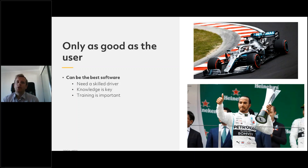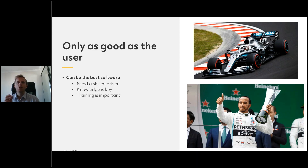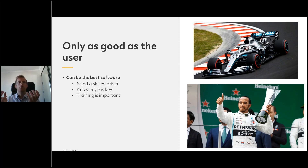It's also only as good as the user. I have a picture here of a Ferrari from Mercedes — it could be the best car in the world, but you need a skilled driver like Lewis Hamilton. You as the user of the CAM software need to be skilled. You need to do the right series of processes in the right order and give it the right information each time. Hence knowledge is key and training is important. That's why we're doing webinars like this — to ensure everyone understands what the software needs as its inputs so it can give you the perfect output.